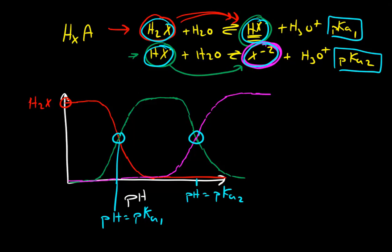And the other point where we can actually quickly figure out the pH is when we are exactly halfway between pKa1 and pKa2. So when we've maximized the concentration of our intermediate, at this point right here where we have 100% of our HX, the pH here is actually going to be the average of pKa1 and pKa2.